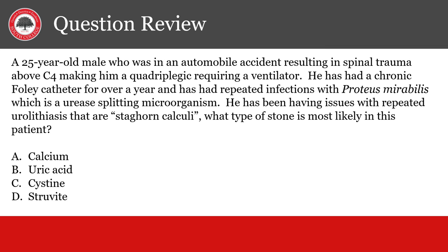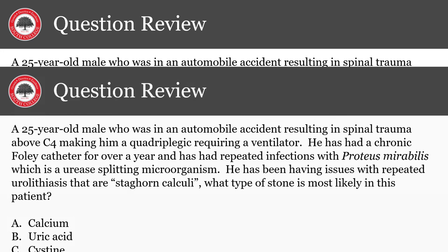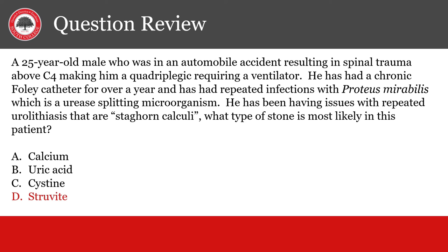A 25-year-old male who was in an automobile accident resulting in spinal trauma above C4, making him a quadriplegic requiring a ventilator, has had a chronic Foley catheter for over a year and has had repeated infections with Proteus mirabilis, which is a urea-splitting microorganism. He has been having issues with repeated urolithiasis that are staghorn calculi. What type of stone is most likely in this patient? This is likely struvite stones given his immobility, use of Foley catheter chronically, and recurring infections with urea-splitting bacteria.